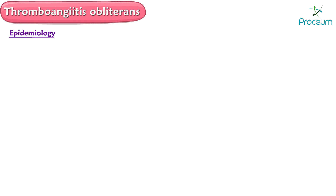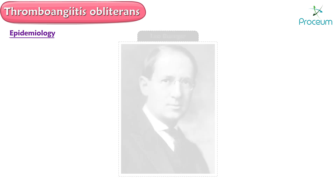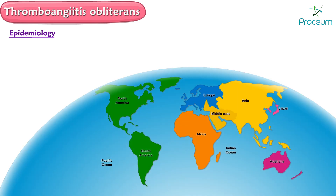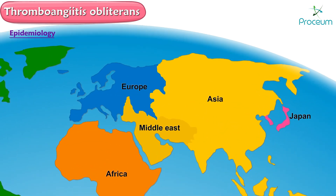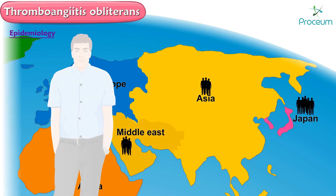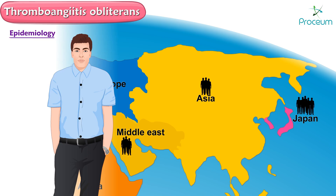First reported in 1908 by Buerger, the disease is seen worldwide with an increased incidence in Asia and the Middle East, with a particularly high incidence in Japan. Men are more commonly affected than women, and the typical age of onset is 35 years.